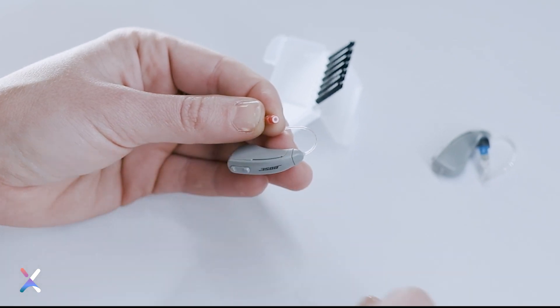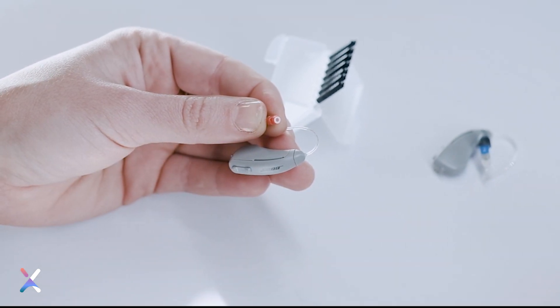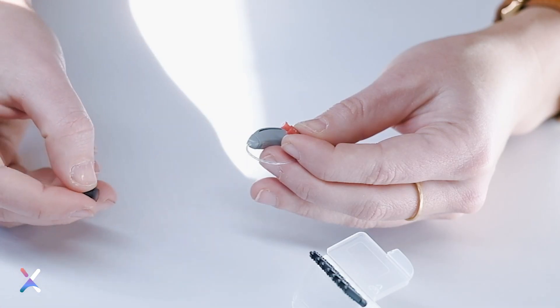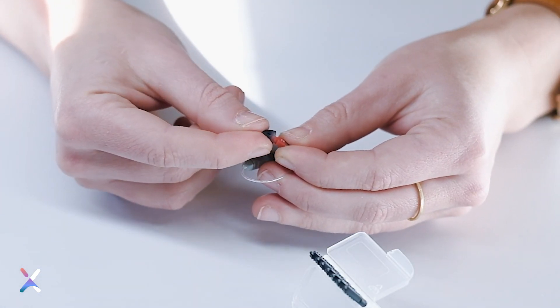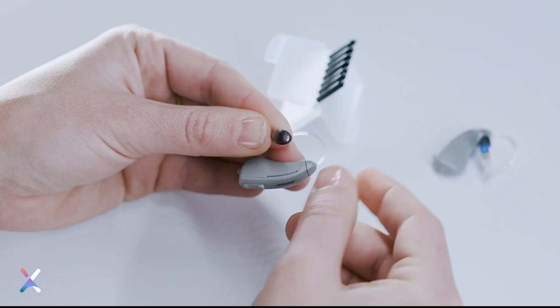This ensures the wax guard is secure and helps prevent it from falling off in your ear canal. Once the wax guard is correctly inserted into the hearing aid, reattach the dome.